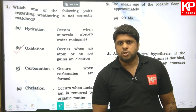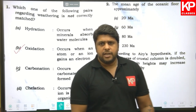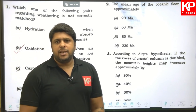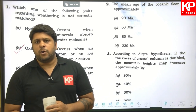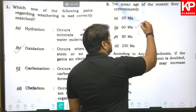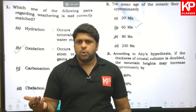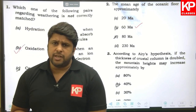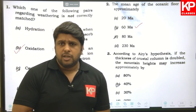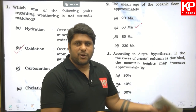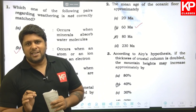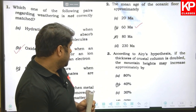Question two: the mean age of the oceanic floor is approximately — the answer is 60 million years, so B is the right answer. You should know that the oldest oceanic crust is in the Pacific at around 160 to 180 million years old, so 230 is never going to be the answer and 20 is also not going to be the answer. You're left with only 60 and 80, so you could have narrowed it down even without knowing the exact answer.